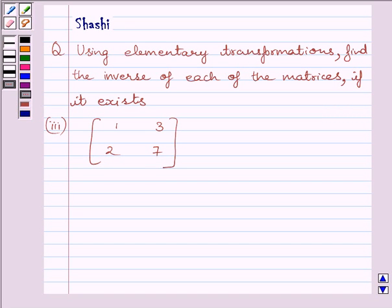Hi and welcome to the session. I am Shashi and I am going to help you with the following question. The question is, using elementary transformations, find the inverse of each of the matrices, if it exists. The matrix given to us is [1, 3; 2, 7].